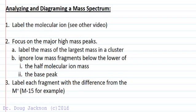It's the highest non-isotopic mass in your spectrum. After we've labeled the molecular ion, we're going to focus on the major high mass peaks and label those with their mass, the largest in a cluster, and ignore low mass fragments that are below the lower of the half mass of the molecular ion or lower than the base peak. Whichever one's the lowest, we're going to ignore the fragments below that because they're likely fragments of fragments.